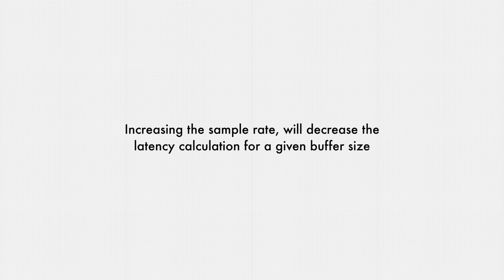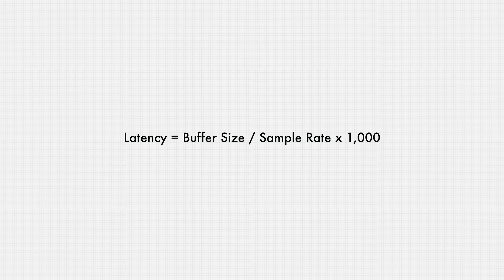With quick and rough math, we can equate 2.6 milliseconds to the time it takes for sound to travel about 3 feet from a guitar amplifier to your ears, so it's no big deal. As a quick side note, increasing the sample rate will decrease the latency calculation for a given buffer size. The formula is: latency equals buffer size divided by sample rate, multiplied by 1,000. Also notice that the bit depth is not a part of this formula, because the buffer size is measured in samples, not bits — though bit depth does have some relevance, as you'll see in a moment.